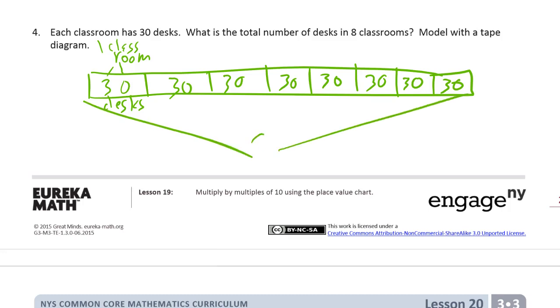And we need to know the total of all those 30s. So our equation is going to be 8 times 30 equals our question mark. And that's the same as think of 8 times 3. That's 24. So that's going to be 240.